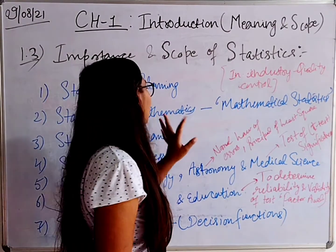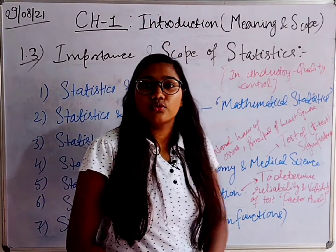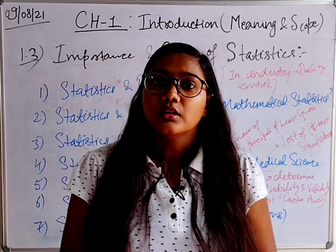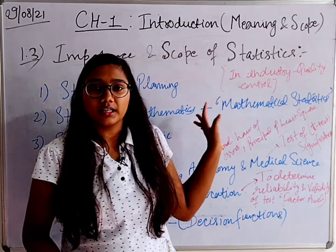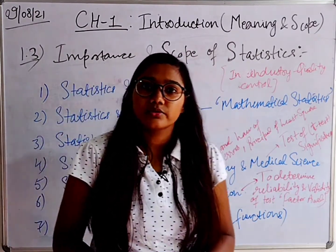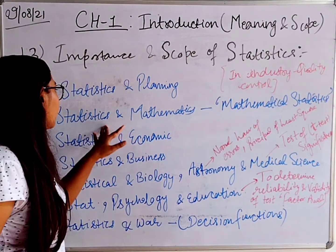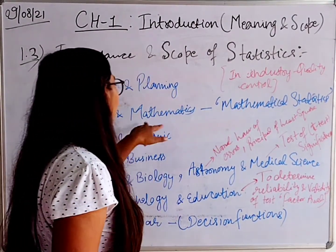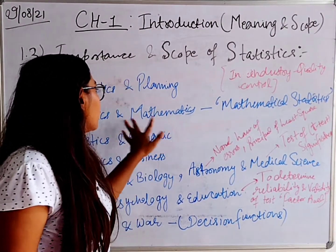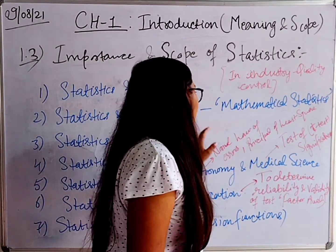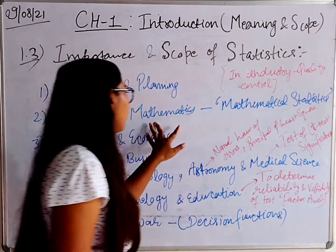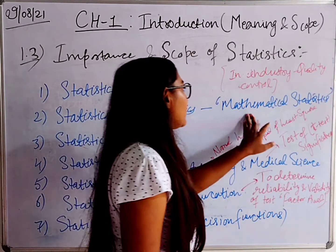Next is Statistics and Mathematics. Statistics is used extensively in mathematics — particularly in its numerical parts. Examples include Laplace and inequalities. Statistics is used in so many parts of mathematics that it is often called a branch of applied mathematics, known as Mathematical Statistics.